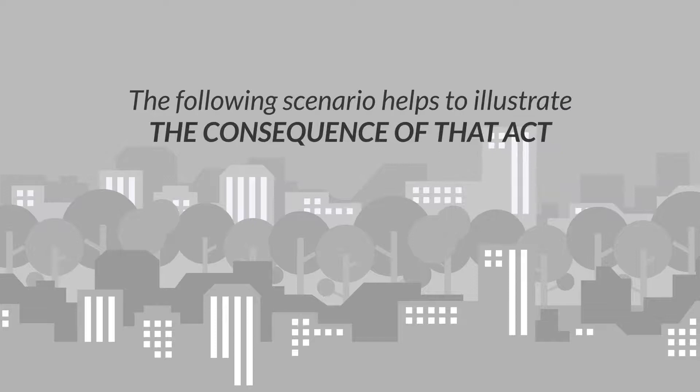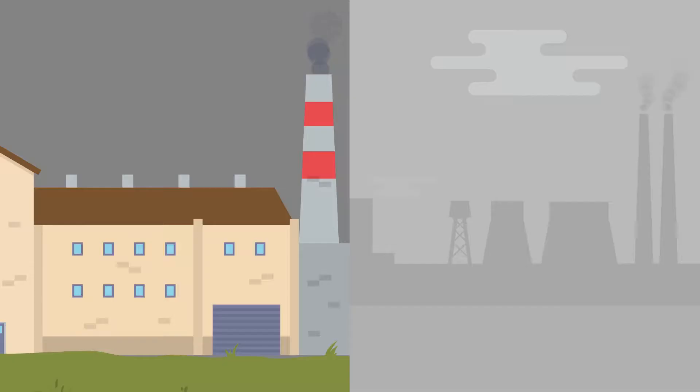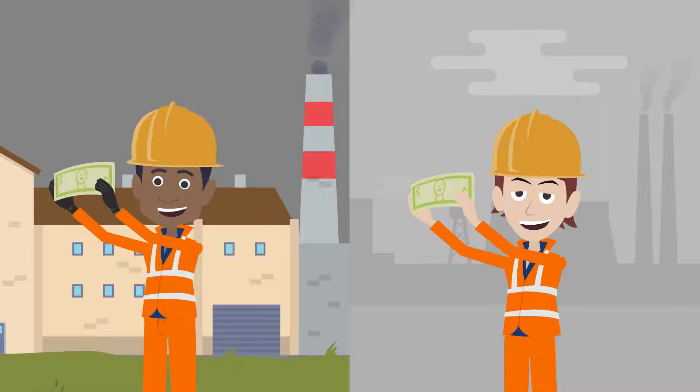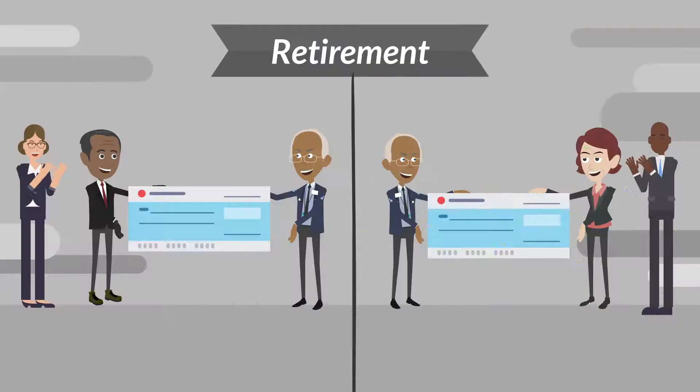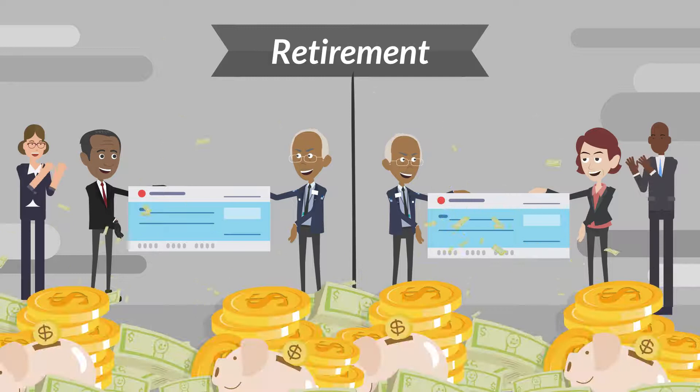The following scenario helps to illustrate the consequences of that act. Imagine two factory workers who earn exactly the same salary each month, one white and the other black. On retirement, they are both granted the same pension package for their labor.